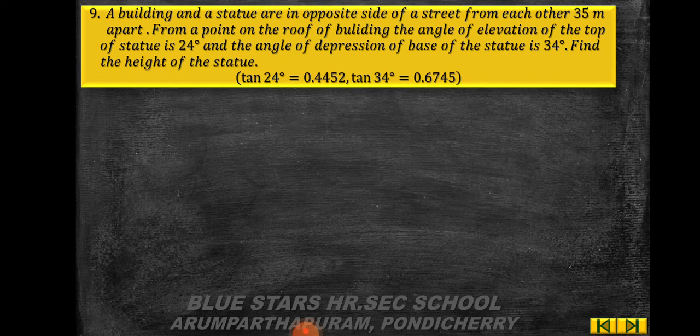Problem 9 (last problem): a building and a statue are on opposite sides of a street, 35 meters apart. From a point on the roof of the building, the angle of elevation of the top of the statue is 24° and the angle of depression of the base of the statue is 34°. Find the height of the statue. (tan 24° = 0.4452, tan 34° = 0.6745.)